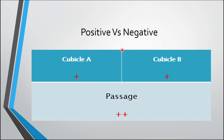We need to understand the difference between positive and negative pressure. Cubicle A is positive and cubicle B is positive; however, the passage is double positive — meaning the passage is at high pressure and the cubicles are at low pressure relative to it. If another area has triple positive pressure, that area will be at positive pressure in comparison with the passage.